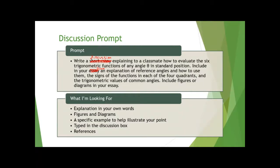You're explaining to a classmate how to evaluate the six trig functions of any angle theta in standard position. So if you're going to explain how to do that, the best thing to do is to provide a demonstration. Include in your post an explanation of reference angles and how to use them, the signs of the functions in each of the four quadrants, and the trig values of common angles. Include figures and diagrams. That's going to be the only way that you're really going to have this make sense. So I'm looking for the explanation in your own words, figures and diagrams, a specific example, typed in the discussion box, and references.